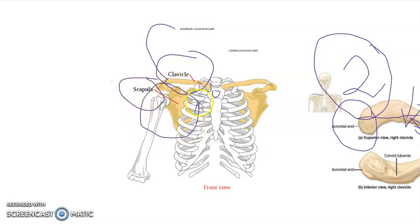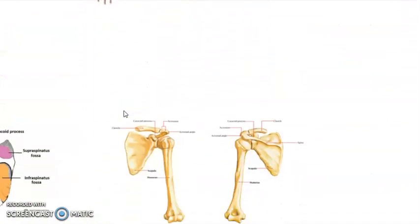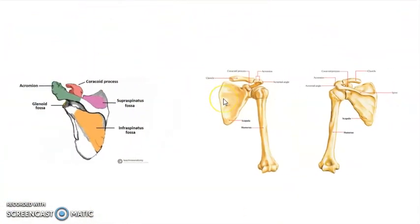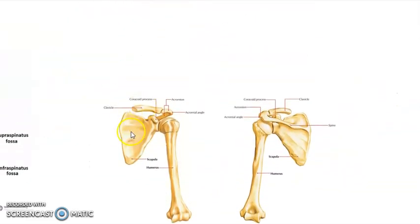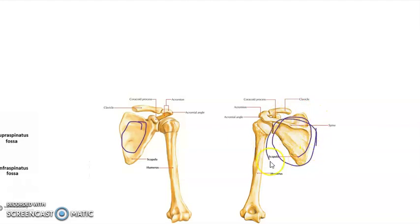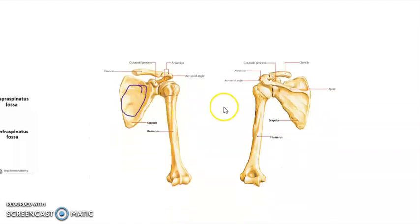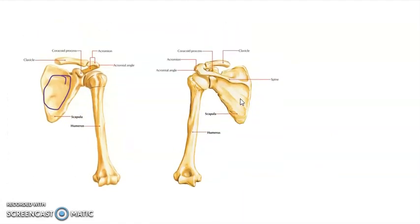Now let's talk about the scapula, which is a much more interesting and very important part of this lesson. The scapula has got two surfaces: the anterior surface and the posterior surface. When you touch your back and your spine, you are touching the posterior surface; when you touch your chest, you are touching the anterior surface. It has got the following angles: the superior angle, the inferior angle, and the lateral angle.